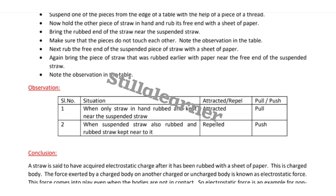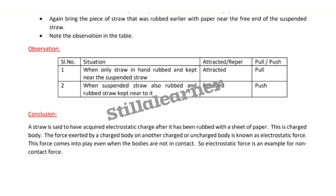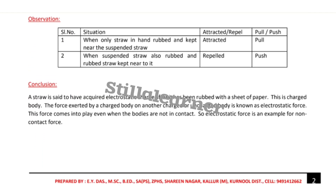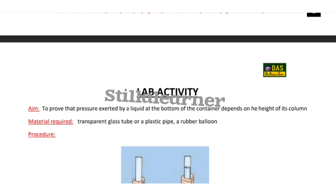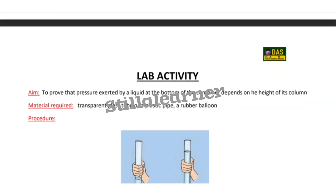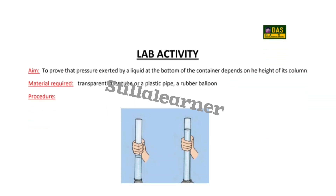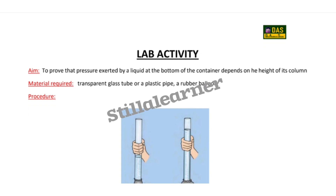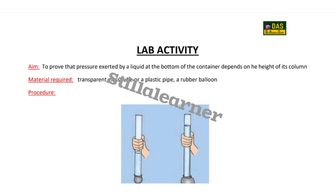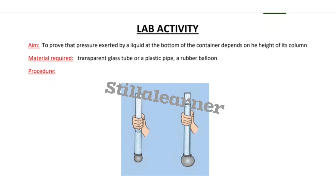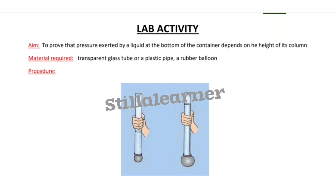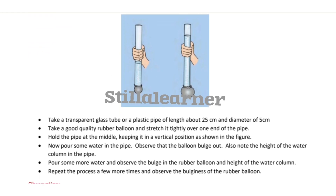The third lab activity is to prove that pressure exerted by a liquid at the bottom of a container depends on the height of its column.